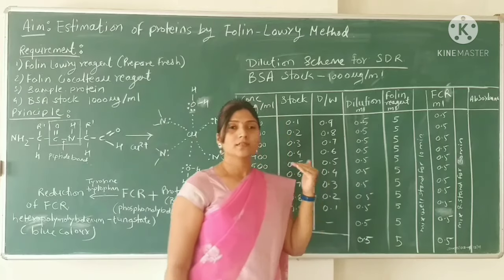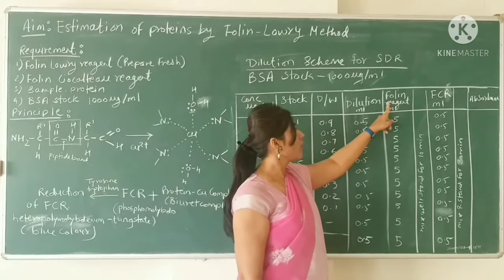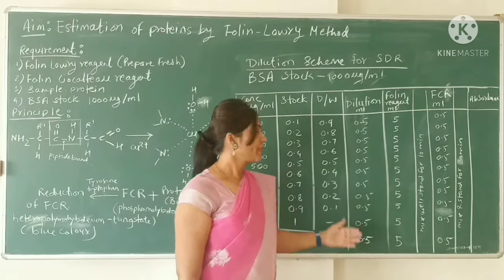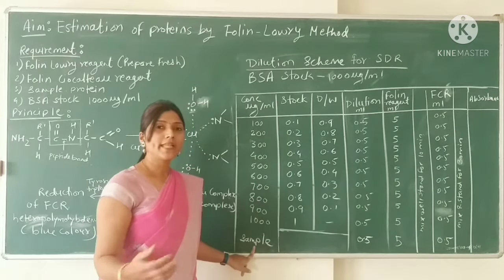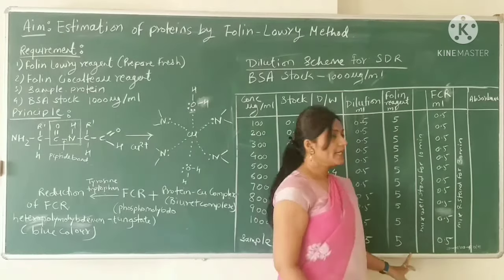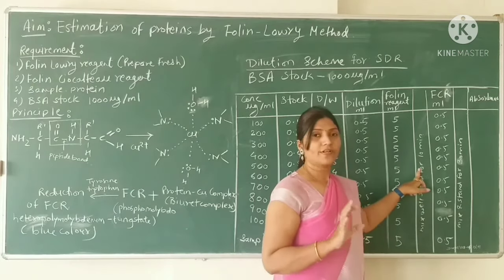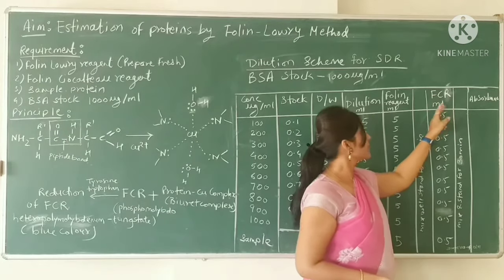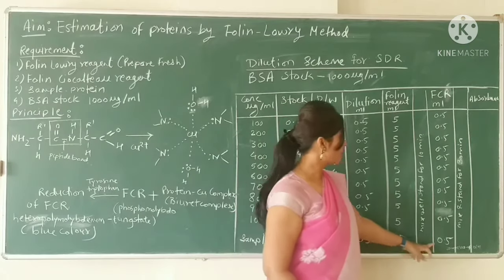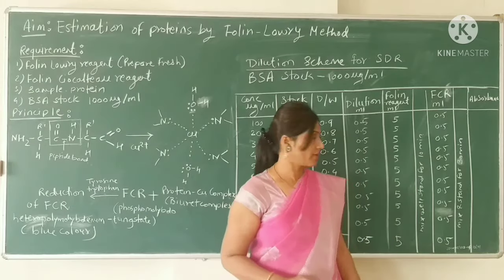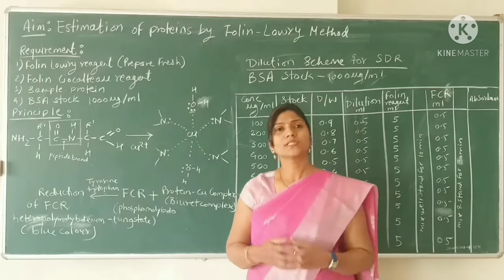After taking 0.5 ml from each dilution tube, add 5 ml of Folin-Lowry reagent to each. For the blank, take 0.5 ml distilled water, and for the sample, take 0.5 ml of the unknown sample. Mix thoroughly and wait for 10 minutes. After 10 minutes, add 0.5 ml of FCR reagent to each tube — including the blank and sample. Then mix and wait for 30 minutes. After 30 minutes, take the absorbance at 650–700 nm.